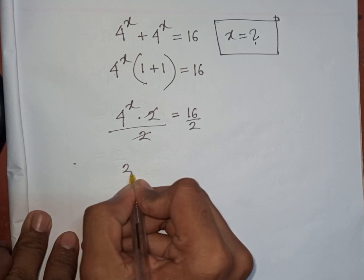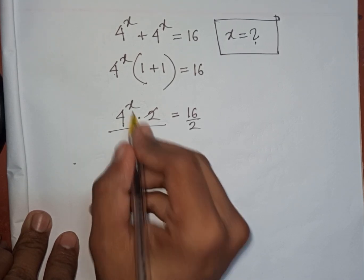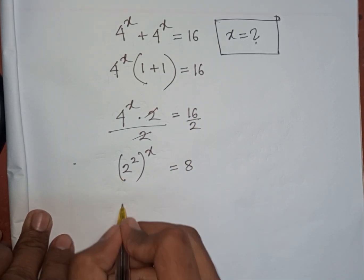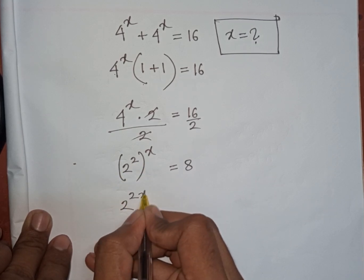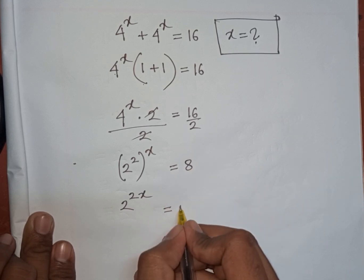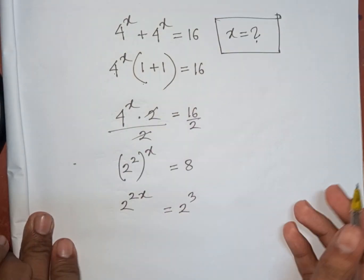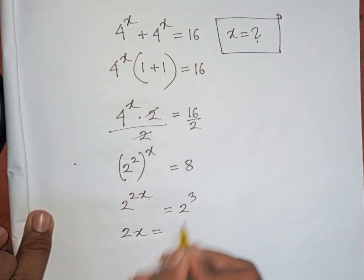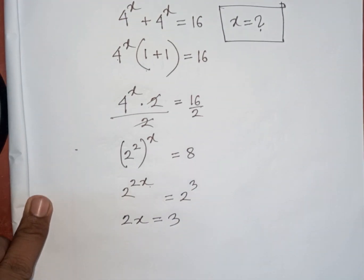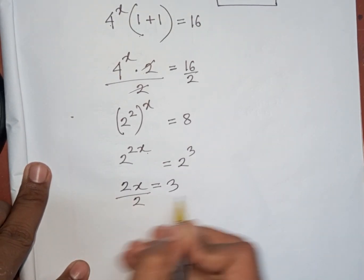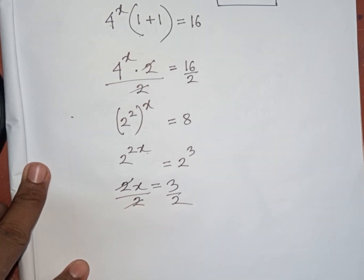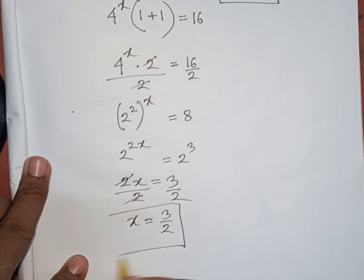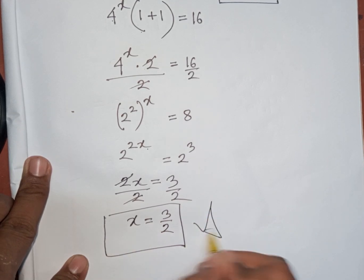Now, 4^x = (2²)^x = 2^(2x), and 8 = 2³. So 2^(2x) = 2³, meaning 2 and 2 cancel, giving 2x = 3. Dividing both sides by 2, x = 3/2. This is the value of x and our final answer.